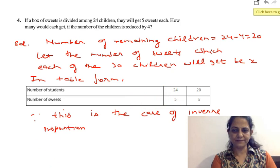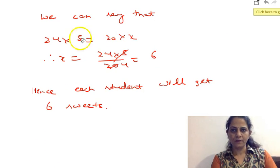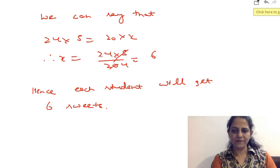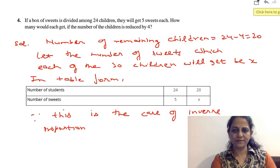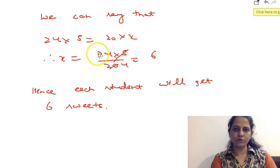So we can say that 24 into 5 is equal to 20 into x. So x is equal to 24 into 5 divided by 20, that is 6.